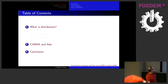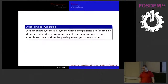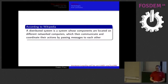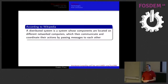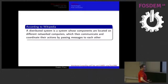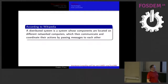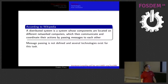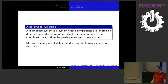The goal of this presentation is to show you how we can distribute some computing in Ada. For this, I will first explain what distribution is. According to Wikipedia, a distributed system is a system where each component is located on different computers on the network, and they can coordinate and communicate using message-passing. The problem is that message-passing is never defined, and for this task we have several technologies.